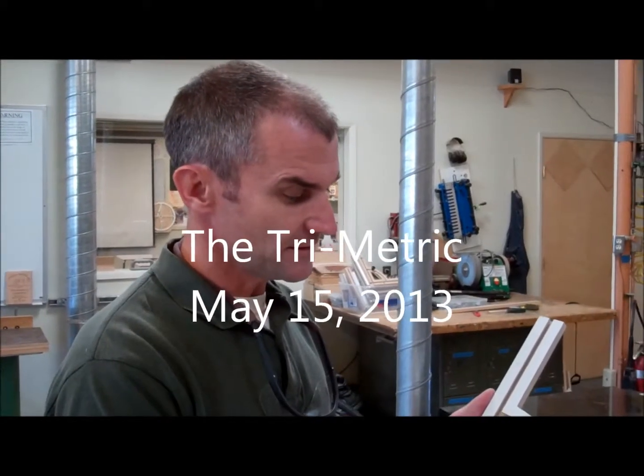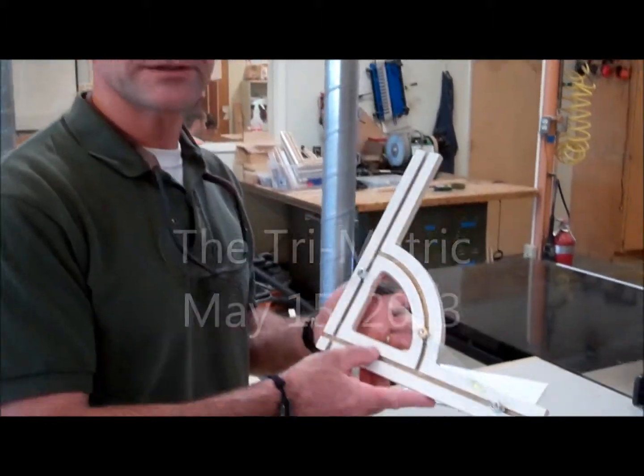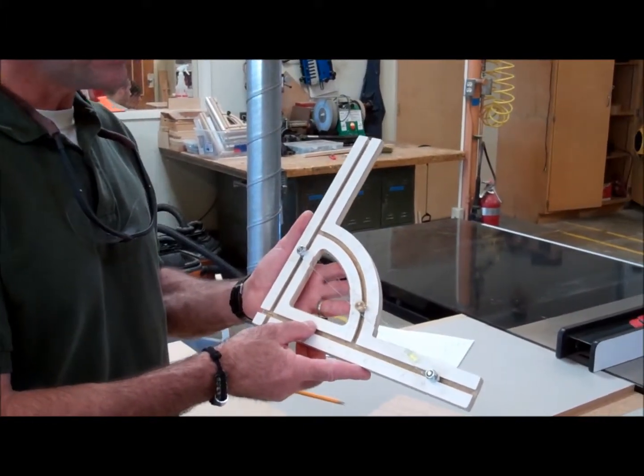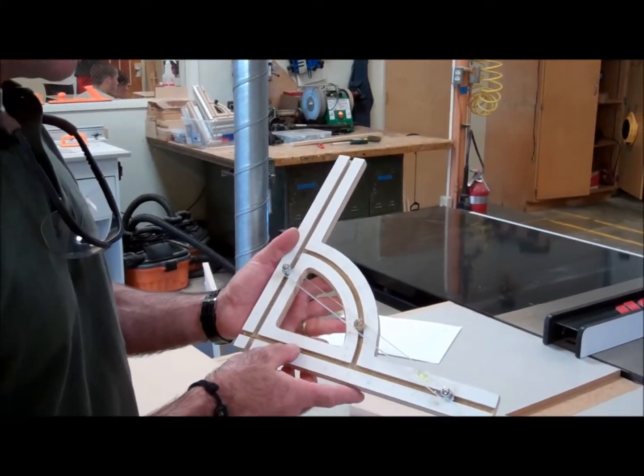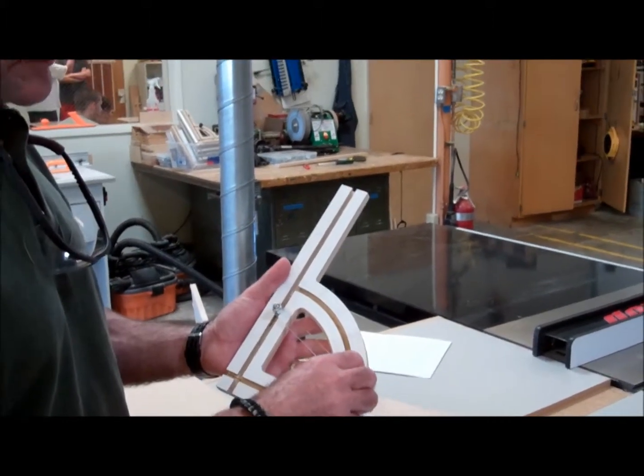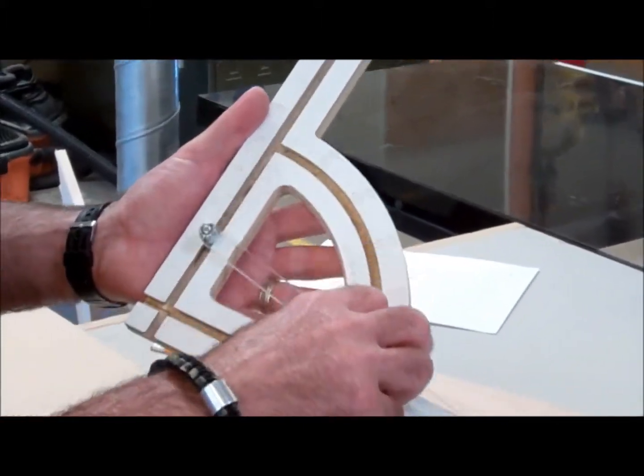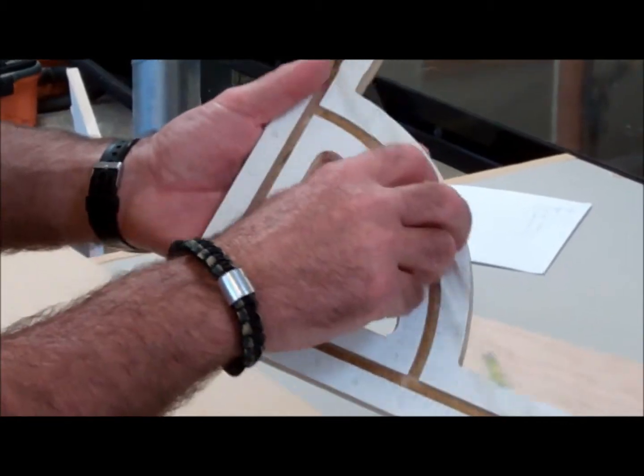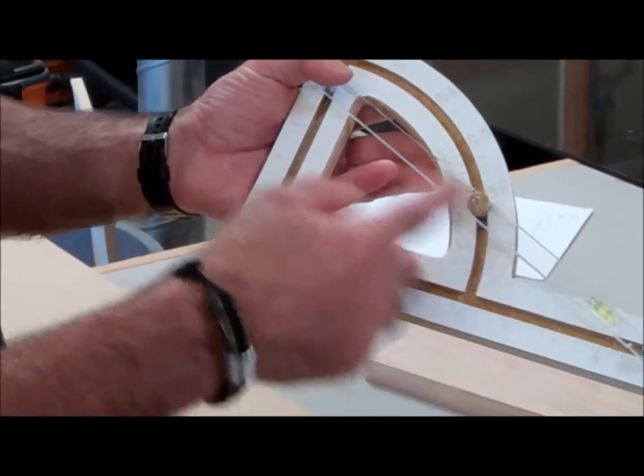Hey, I'm Jonathan with the Trimetric, the ultimate layout tool. It takes the best features of a combination square and the best features of a speed square. This is the thumb screw that loosens up and this 10-inch ruler travels in that slot. And what it does is it gives you similar triangles.